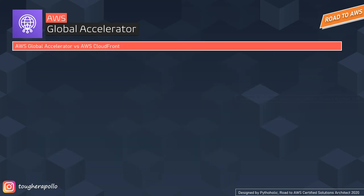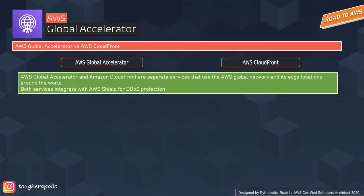Many of you might think this service seems quite similar to CloudFront and wonder what the difference is. Both Global Accelerators and CloudFront are individual services with specific use cases. Both use edge locations and the AWS global network to serve content. An edge location is a location, not a service — we don't create edge locations via the AWS console; we create services such as CloudFront and AWS Global Accelerator which make use of those edge locations. Both services can also be integrated with AWS Shield for protection against DDoS attacks.